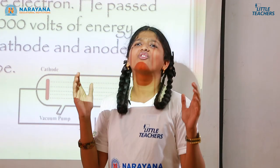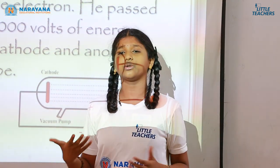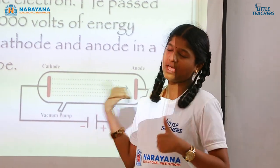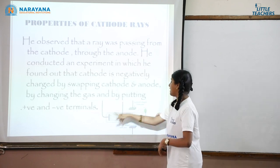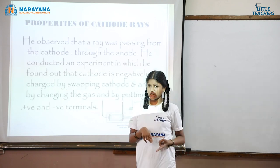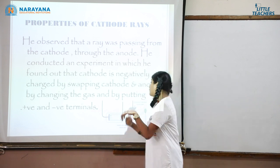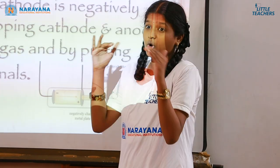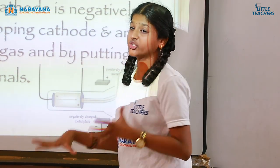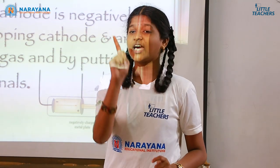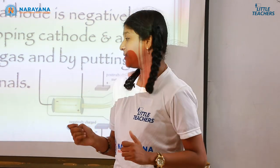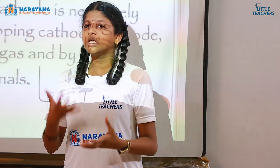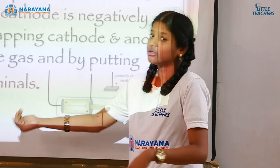He was shell shocked and needed to know the reason behind this. So he conducted further experiments based on the properties of this cathode ray, using another discharge tube. He altered the hydrogen gas and used a different gas instead, but saw the same ray passing from the cathode through the anode. He then swapped the cathode and anode positions, but still saw the ray passing from the cathode through the anode.